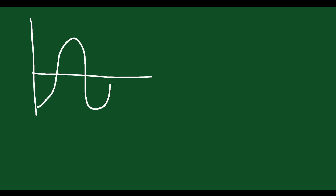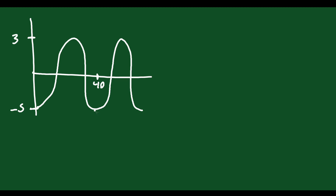Let's do one more. This graph has a maximum value of 3 and a minimum value of negative 5. We can see that this point is at 40 and this one is at 80. Where's the midline? From 0 to the bottom is a distance of 5, and up to 3 is a distance of 3. Together that's 8, so the total height from bottom to top is 8, and dividing by 2 gives 4. So the amplitude is 4.